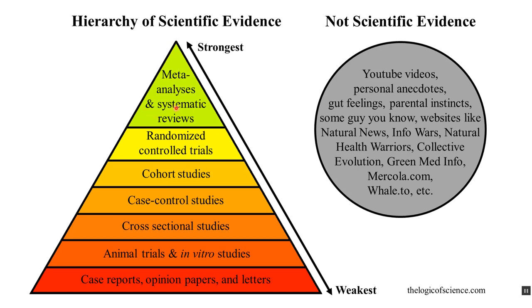Meta-analyses and systematic reviews systematically collect published research studies — for example, 100 or 1,000 randomized controlled trials — and use statistical analyses to analyze all that data, or systematically review the outcomes of those studies. This is the strongest form of evidence because you avoid biases that could exist in any single experiment. Keep in mind this hierarchy from weakest to strongest types of scientific evidence.